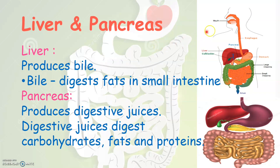By now you have understood how food travels from the mouth into the esophagus, through the food pipe to the stomach, and from the stomach into the small intestine. The digested food in the small intestine is absorbed by the blood vessels in its walls, and the blood carries this digested food to different parts of the body. Undigested food goes into the large intestine, and we will see in the next class what happens there.